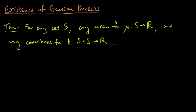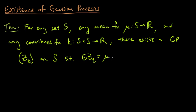there exists a Gaussian process ZT on S such that the expected value of ZT equals mu of T, and the covariance of ZS, ZT equals K(S,T), for any S and T in S.